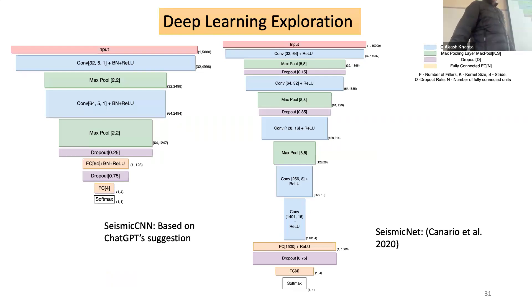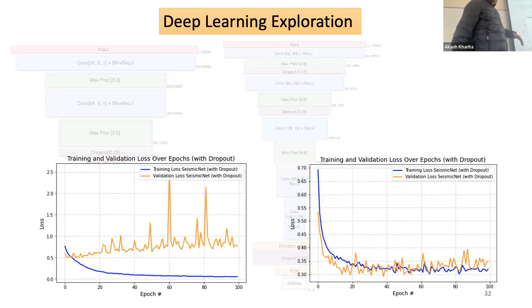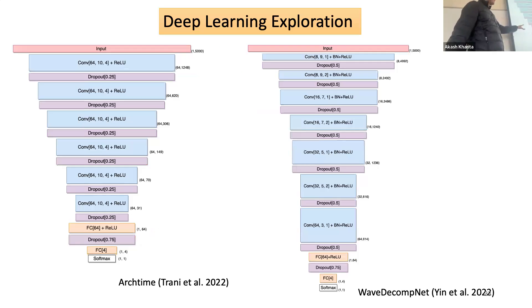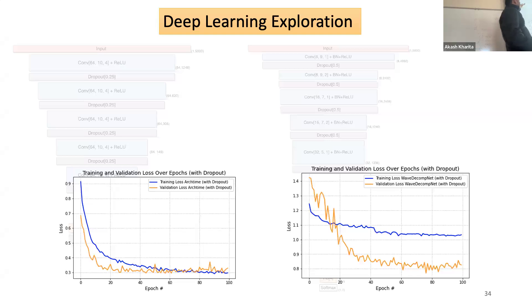I also explored deep learning. I tested several deep learning architectures using single-channel models, surveying previous studies, picking models, and tuning parameters. I tested four architectures and examined training and validation loss curves — ideally both should decrease. If they don't, it indicates overfitting. I changed the architecture until we achieved a nice decrease in the validation loss.